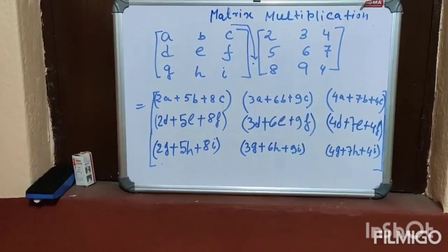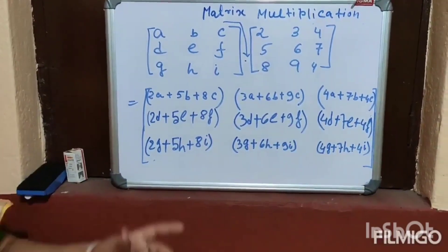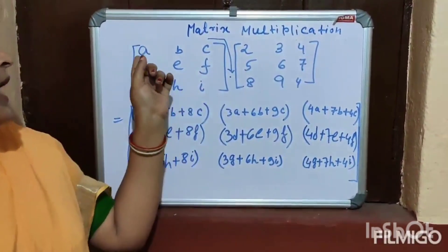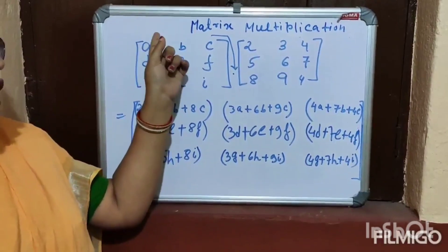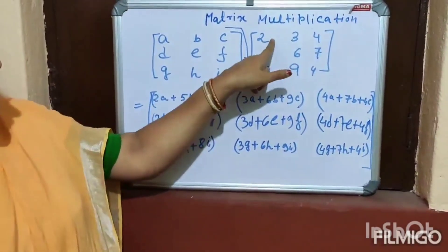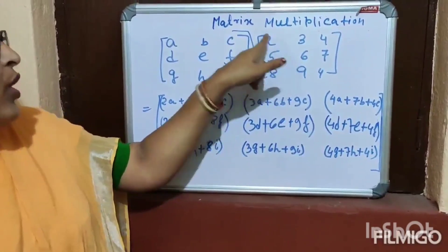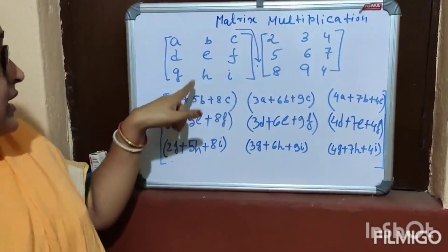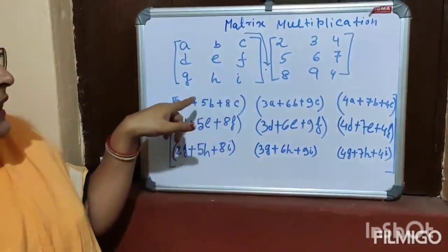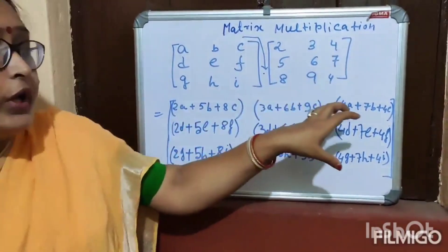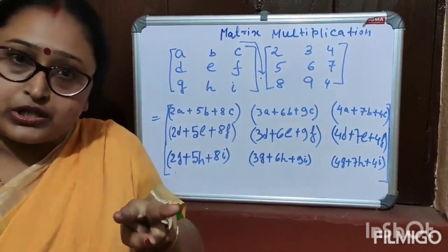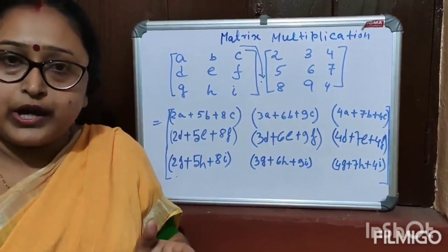The way to multiply two matrices: you multiply the first element of matrix 1 into the first element of matrix 2, and so on. In this way you multiply two matrices.